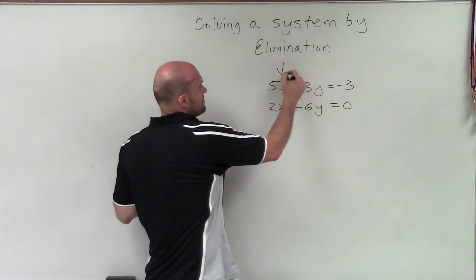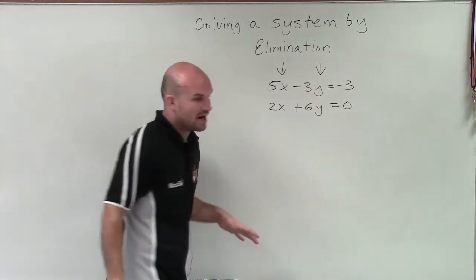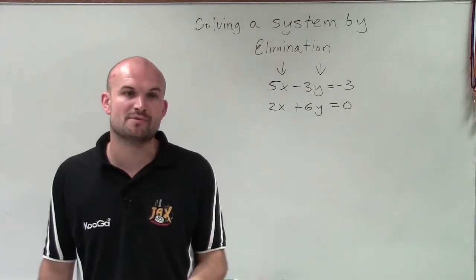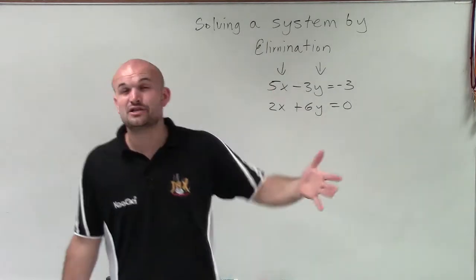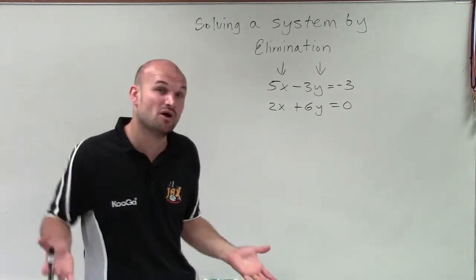Now, I can choose to eliminate the x's or eliminate the y's. And the way that I usually like to determine them is I like to look at the LCM, the least common multiple, of both of my coefficients and determine what is going to be the easiest one for me to multiply by.